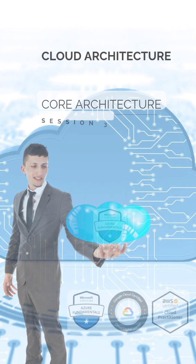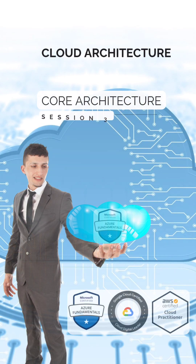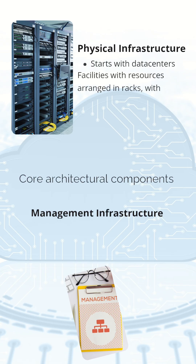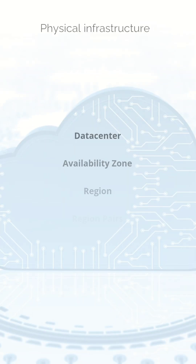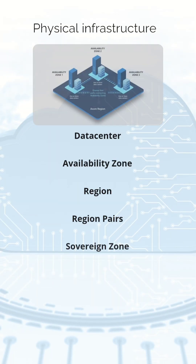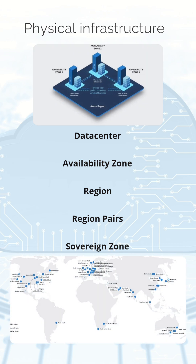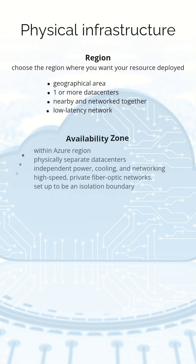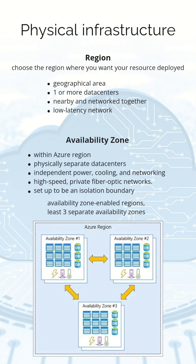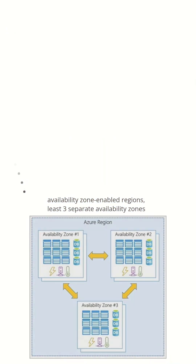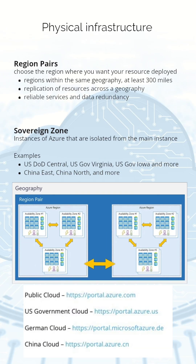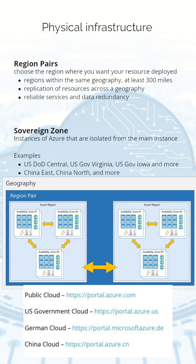The core architecture of cloud computing focuses on physical and management infrastructure. The physical infrastructure includes regions, availability zones, and region pairs, which are used for organizing resources based on geography and the needs for redundancy.